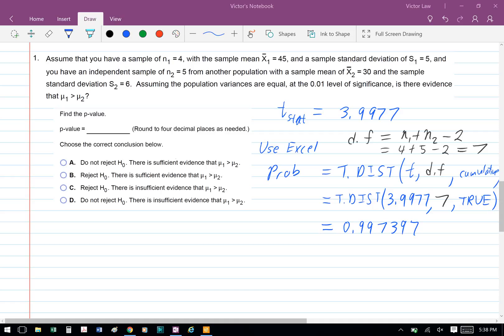So probability equals T.DIST(t, degrees of freedom, cumulative). We have T.DIST(3.9977 as the t, and then degree of freedom is 7, and then comma true for cumulative, and then bracket. And then we get the probability equals to 0.997397.